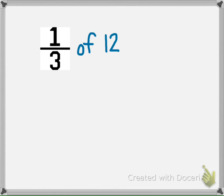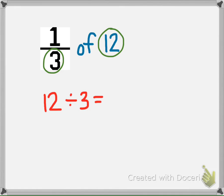There is an easier mathematical way to find the fraction of a set. You need to recognize and be familiar with multiplication and division fact families. Notice the numbers in the math expression one-third of 12. How are those numbers related? 12, 3, and another number are related numbers in a multiplication and division fact family. To find the related number, you simply divide the total number of the set by the denominator of the fraction. Divide 12 by 3. 12 divided by 3 equals 4, so one-third of a set of 12 things is 4.